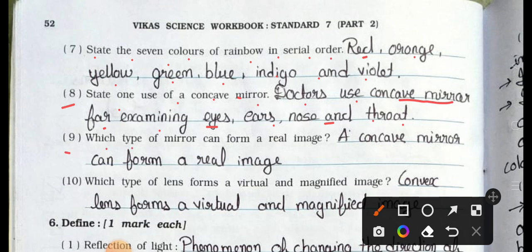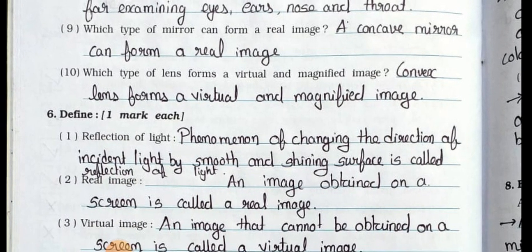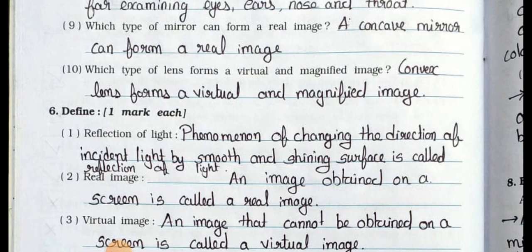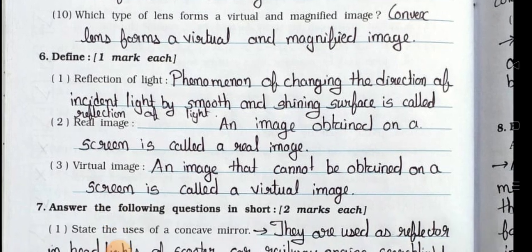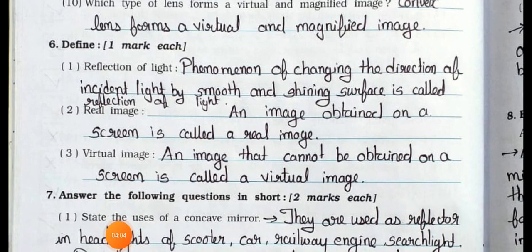Question 9: Which type of mirror can form a real image? Answer: A concave mirror can form a real image. Question 10: Which type of lens forms a virtual and magnified image? Answer: Convex lens forms a virtual and magnified image. Now see main 6.